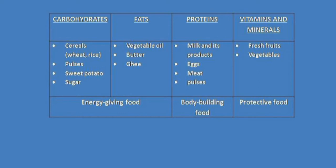Carbohydrates and fats are called energy-giving food because they provide quick energy to the body. Proteins are called body-building food, and vitamins and minerals are called protective food. Two other main types of food required by our body are water and roughage.